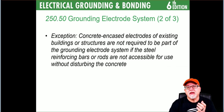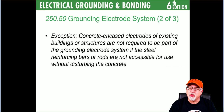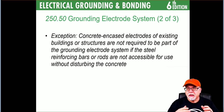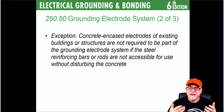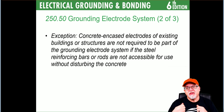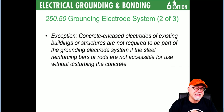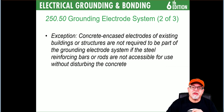There is an exception: concrete encased electrodes of existing building structures are not required to be part of the grounding electrode system if the steel reinforcing bars or rods are not accessible without disturbing the concrete. If the slab is already in place and making connection would require chiseling up to reach the rebar — thus weakening the foundation — then you act like it's not there and install a grounding electrode system per 250.52.